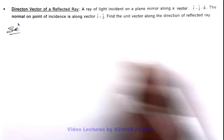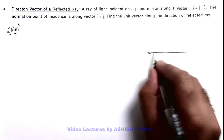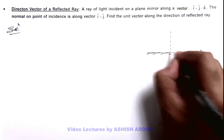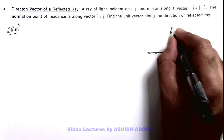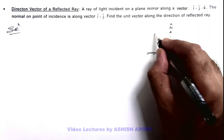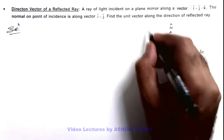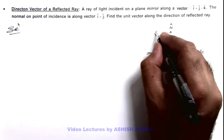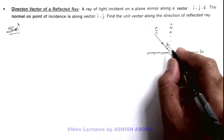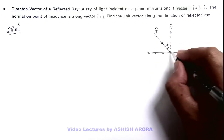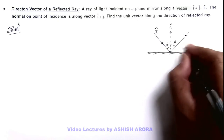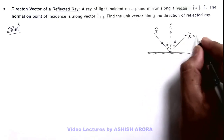In the solution, if we first draw the situation, we can see: this is the mirror, and along its normal we consider the vector n̂, which is the unit vector along the normal direction. This is the light ray incident on it, and the unit vector in the direction of the incident ray we write as î. If this angle is θ — the angle of incidence — we know that the light ray is reflected at the same angle with the normal according to the law of reflection. So this will be the unit vector r̂ which we are required to find.